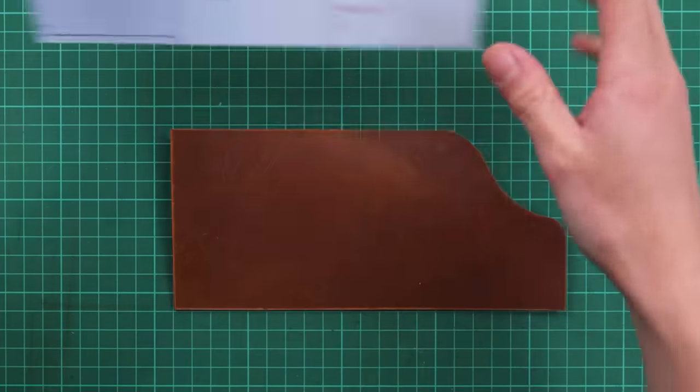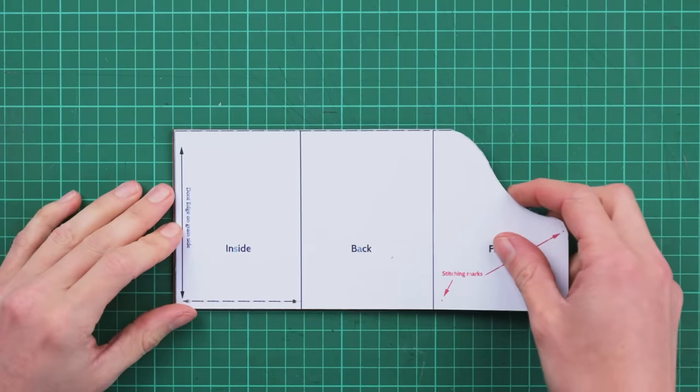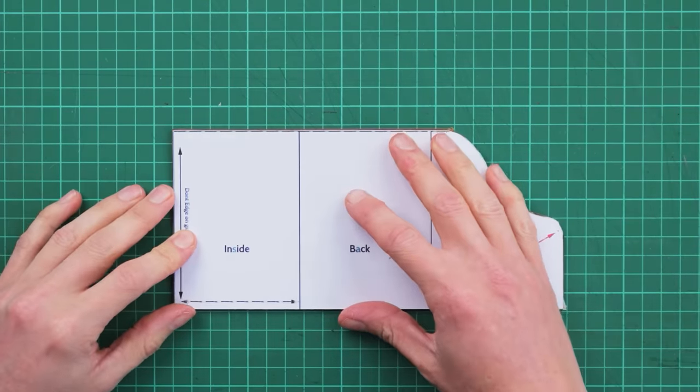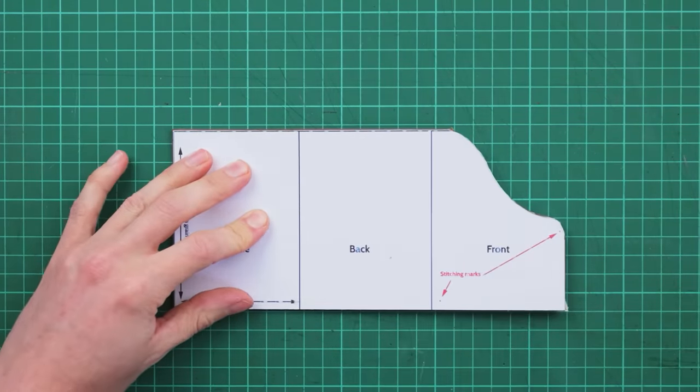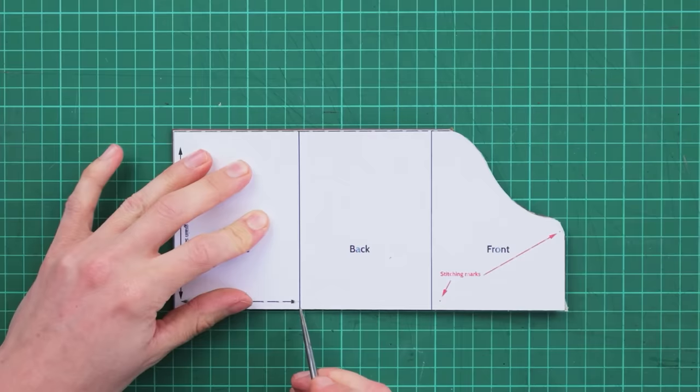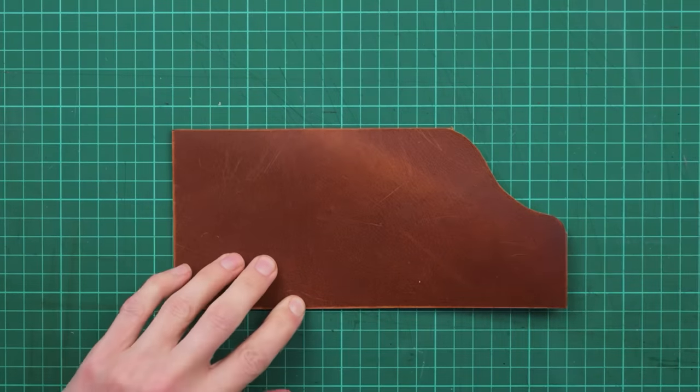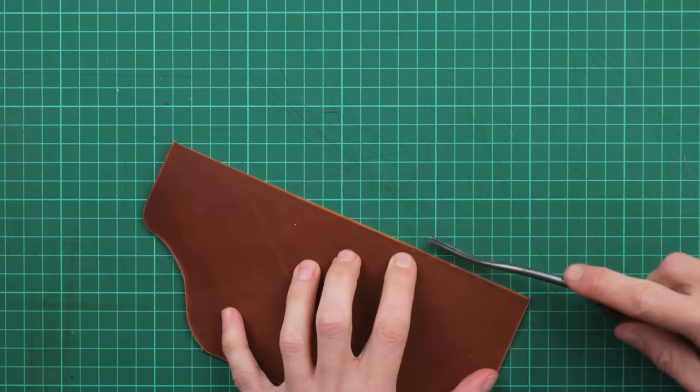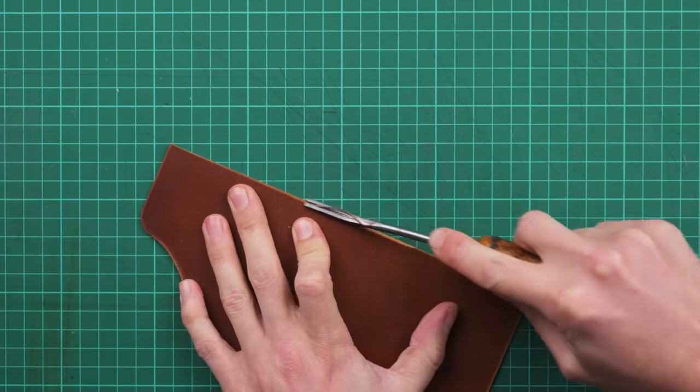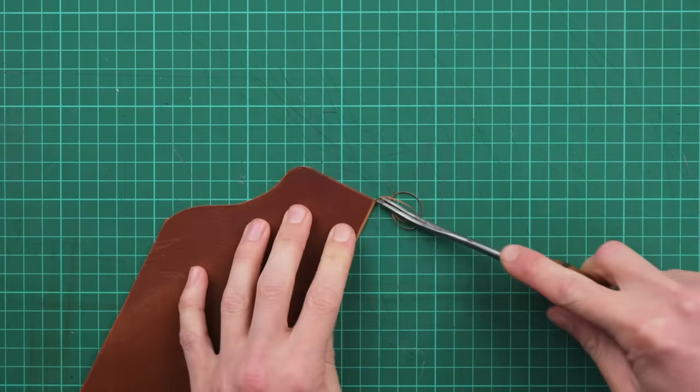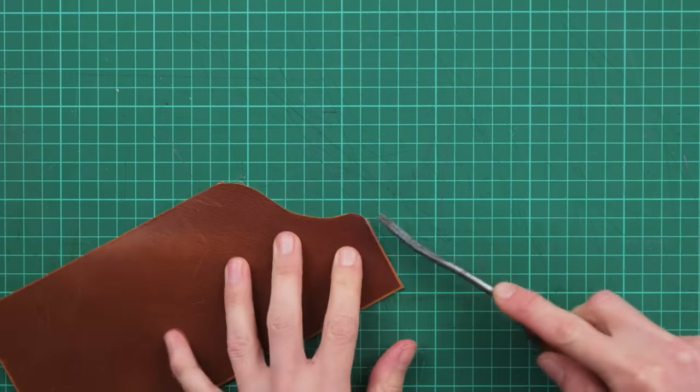And once you've cut out your card holder what we need to do is just mark on where that inside line is onto our case. And we're going to edge up from there. So we're going to use our number one edge tool and we're going to edge the rest of our card wrap.